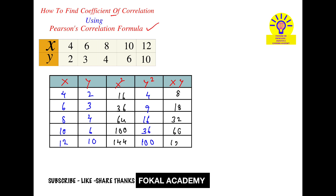In the next step, find the sum of each column. The sum of all x values, that is summation of x, equals 40. Next, sum of all y values equals 25. Sum of all x square values equals 360. Sum of all y square values equals 165. Sum of the xy column equals 238.